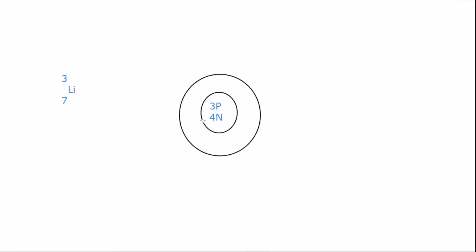The first shell of an atom can fit a maximum of two electrons. So when we're drawing our electrons, we always fill up from the innermost shell — the shell closest to the nucleus — and then move outwards. So the inner shells always fill up first before the outer shells. We're going to draw our two electrons in lithium in the first shell, so now the first shell is full. Lithium has three electrons, meaning there's still one more electron, and that now is going to go in the second shell because the first shell is full.